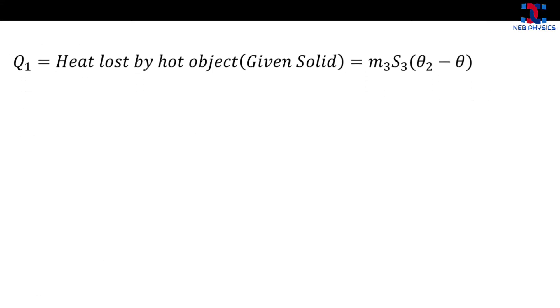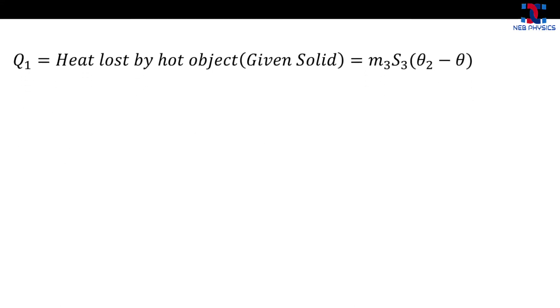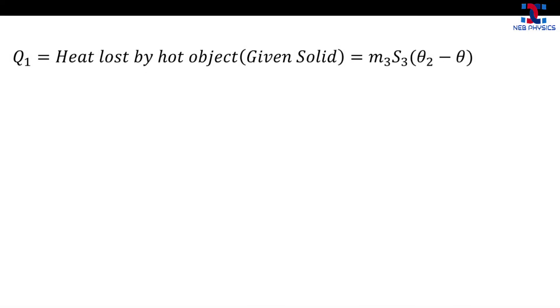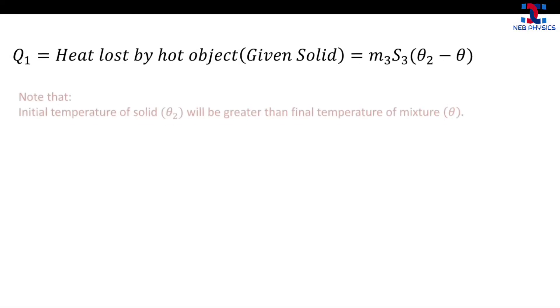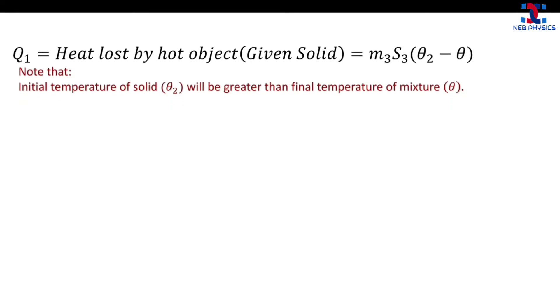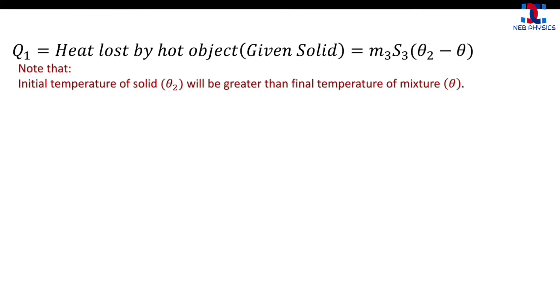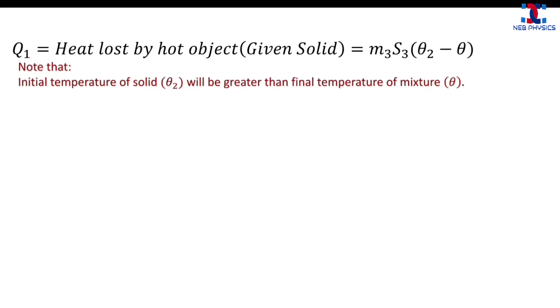The heat is lost by the hot object — here the given solid is the hot object. So let q1 be the amount of heat lost by the hot object: q1 equals M3 times S3 times (theta2 minus theta). Note that the initial temperature of the solid, theta2, is greater than the final temperature of the mixture, theta.